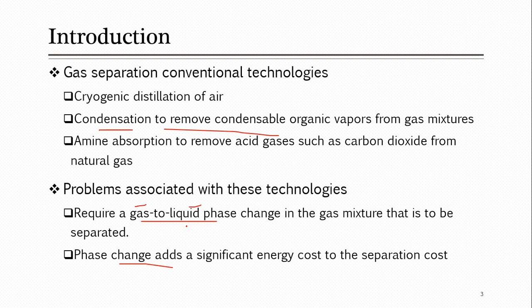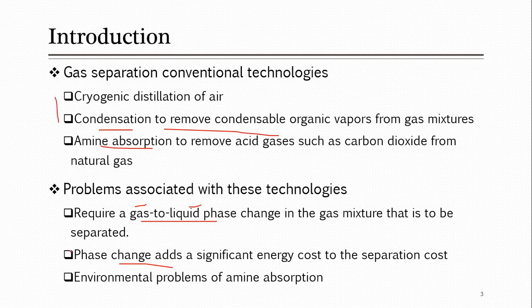Here you need refrigerants and very low-temperature cooling media, which are expensive. Then there are environmental problems with amine absorption systems. The amines used for removal of acidic gases can escape from the system with the gases leaving the plant, making them hazardous for the environment. These are the main problems with conventional technologies, and you can find various other issues in the literature.